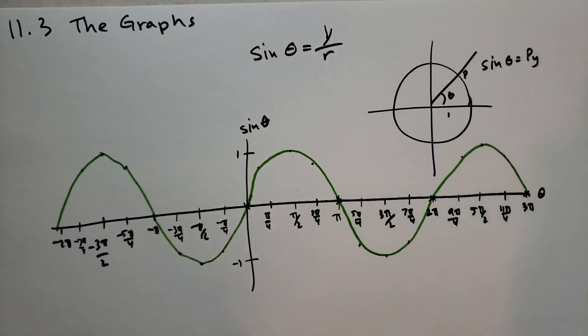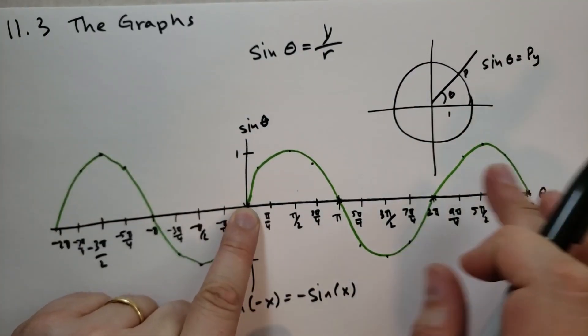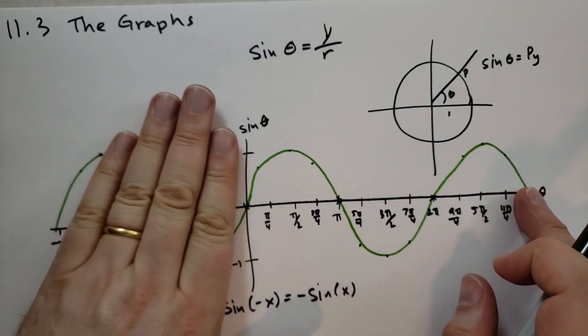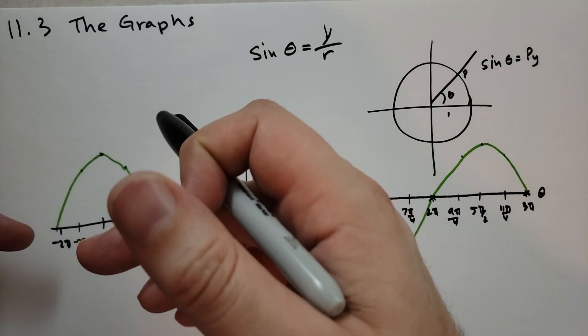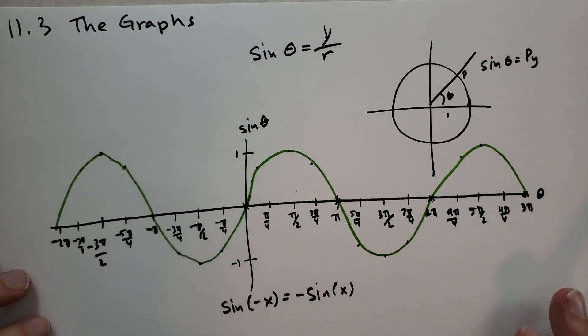Remember the identities that we have. Remember that sine of minus x is equal to minus sine of x. So what that means is if we take the x's and do minus x, then we have to flip the graph over. When we mirror this along this axis, we have to flip the graph over. We're basically rotating it 180 degrees.